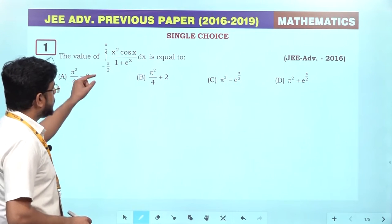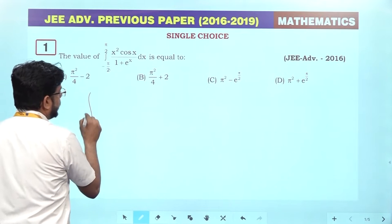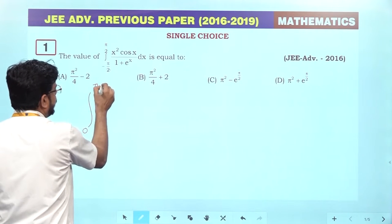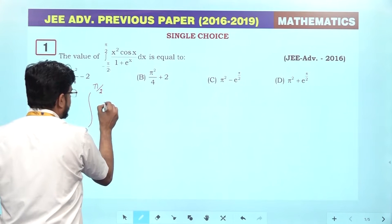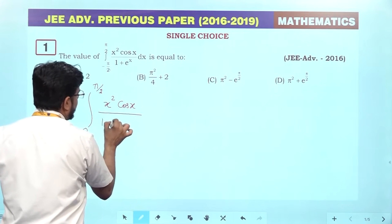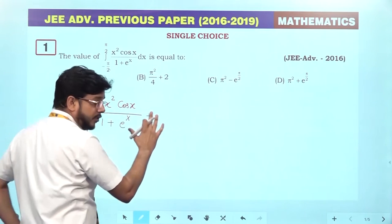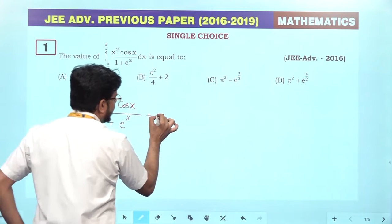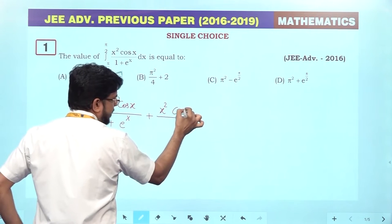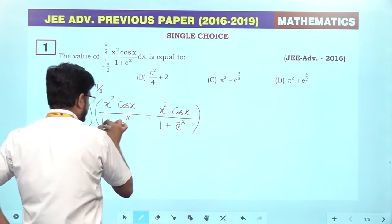The first question involves integration from minus pi by two to plus pi by two. We start by using the property for this symmetric interval. The function f(x) equals x squared times cos(x) divided by one plus e to the power x. We apply f(x) plus f(minus x), replacing x with minus x: x squared remains x squared, cos(minus x) equals cos(x), and we have one plus e to the power minus x dx.